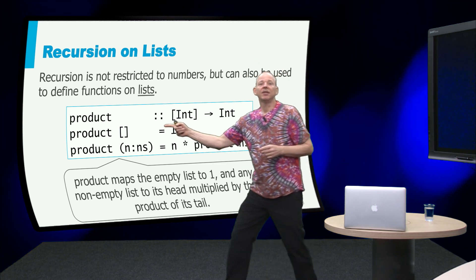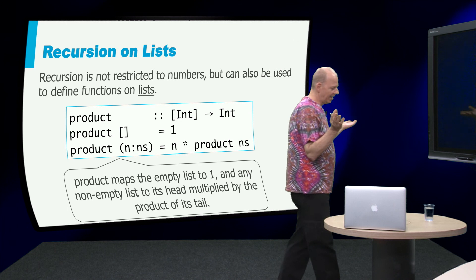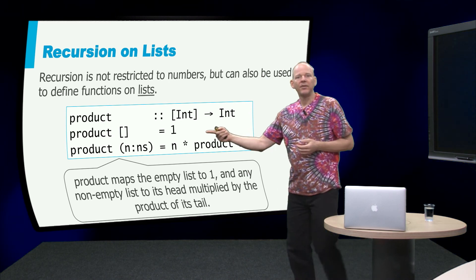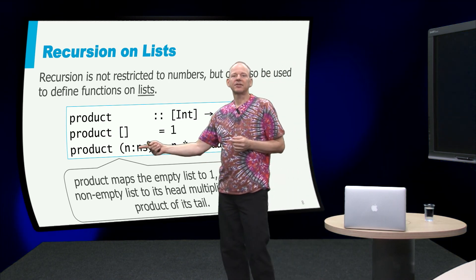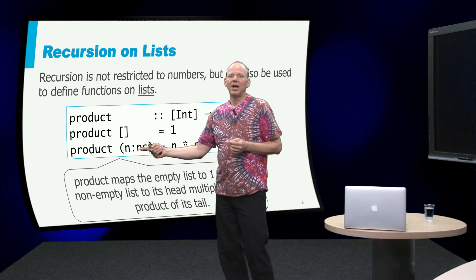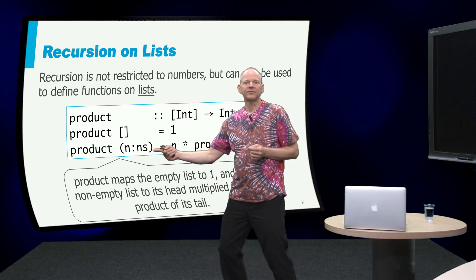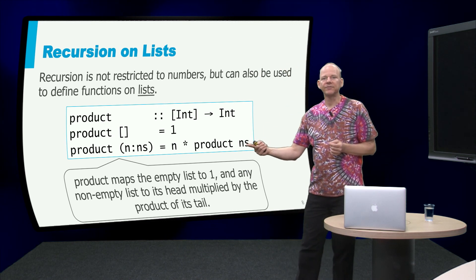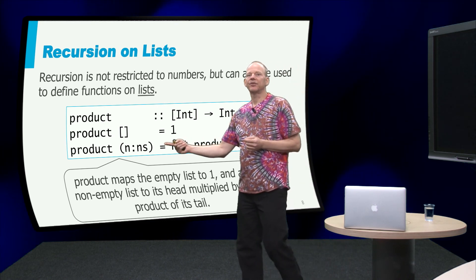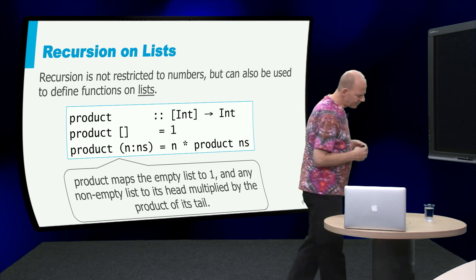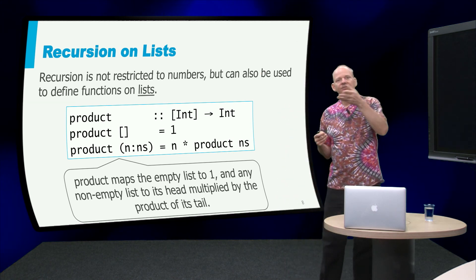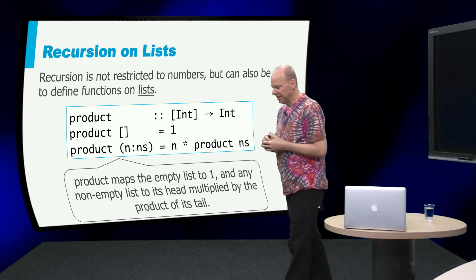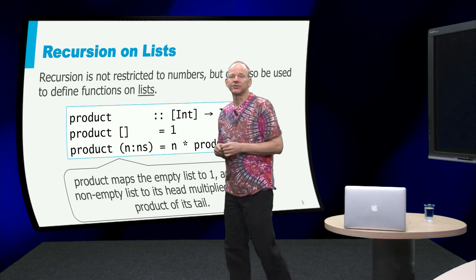We look at the recursive structure of numbers and then we define the functions according to that structure. So in this case if we have the product of the empty list, well that is 1. If we want to take the product of a value n on top of a list ns, what do we do? We take the product of the rest of the list here and then we multiply that by n. Alright, so this is a very easy way to define this function using recursion.